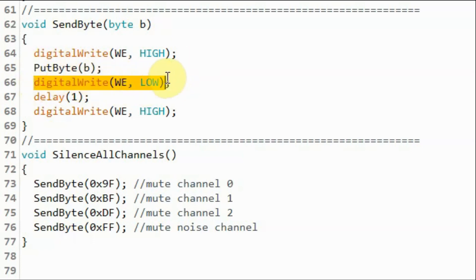And then we set the pulse of the write enable to low to strobe the data. And then we pull it back again high.